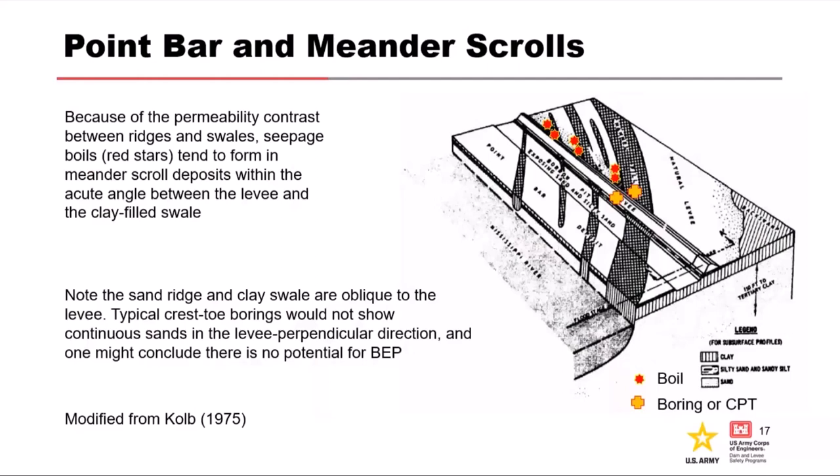When we look at failure modes in BEP, one of the key nodes in the event tree is continuity of materials. If you look at this without the geomorphology, you'd take a levee-perpendicular approach and say we don't have continuity because it's cut off by the clay — when in actuality you have an oblique continuity. It's this three-dimensional spatial orientation that's critical to understanding how you would characterize that particular node in the subsurface.